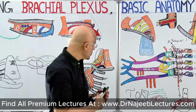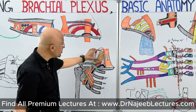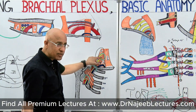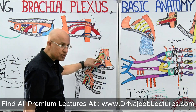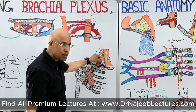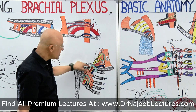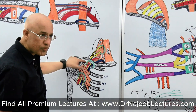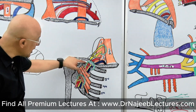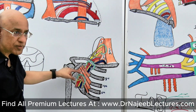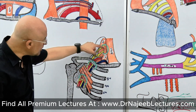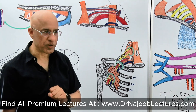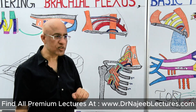The thoracic outlet has three points where it can be compressed. Number one: the inter-scaleni triangle, where the neuronal and sometimes arterial components may be compressed. Number two: when the neurovascular bundle passes between the clavicle and first rib — the costal-clavicular space — or other narrow spaces. Number three: sub-coracoid, just behind the upper part of pectoralis minor.